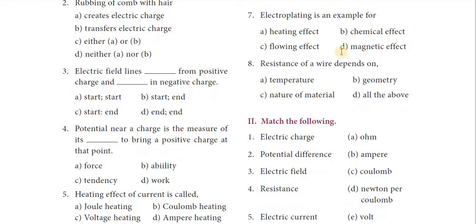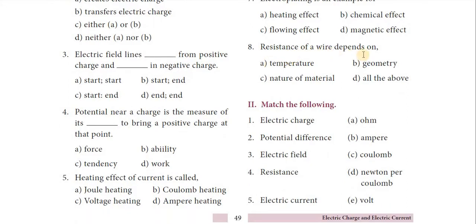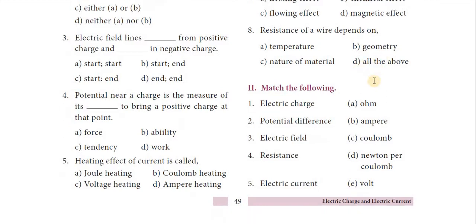Eighth question: resistance of a wire depends on — Option D — all the above: temperature, geometry, and nature of the material. So the answer is Option D, all the above.